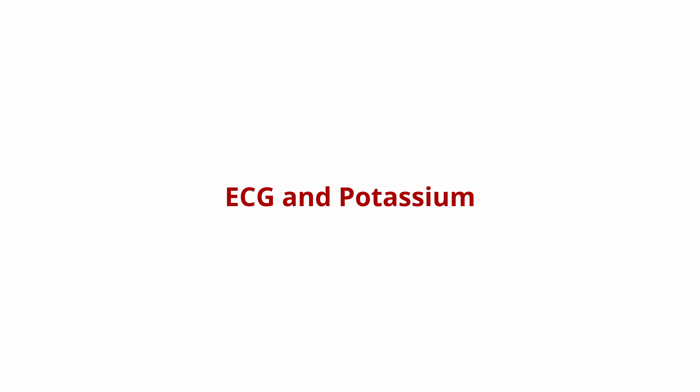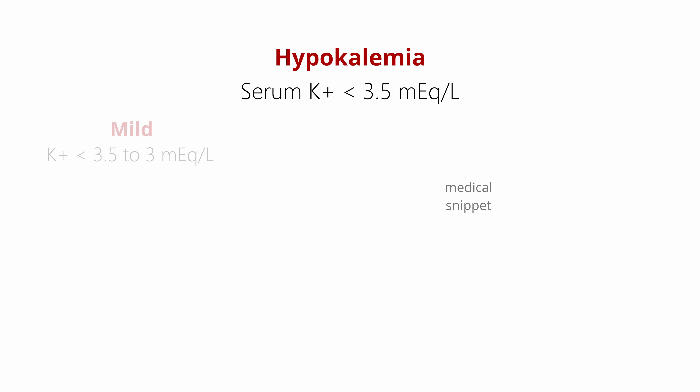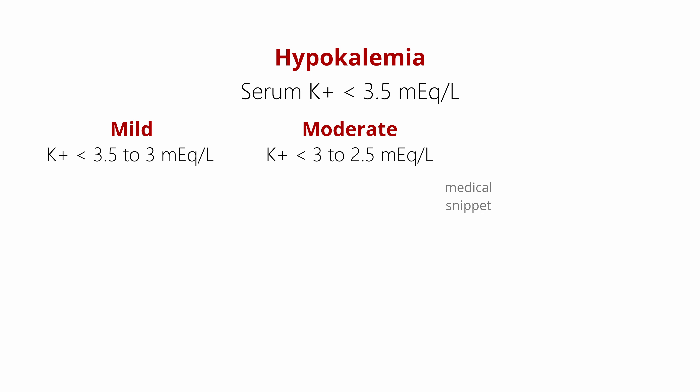In this video, we will discuss the effect of serum potassium in the electrocardiogram. Hypokalemia is defined as serum potassium less than 3.5 milliequivalents per liter. Moderate hypokalemia is defined as serum potassium less than 3 milliequivalents per liter, and severe hypokalemia is defined as serum potassium less than 2.5 milliequivalents per liter.